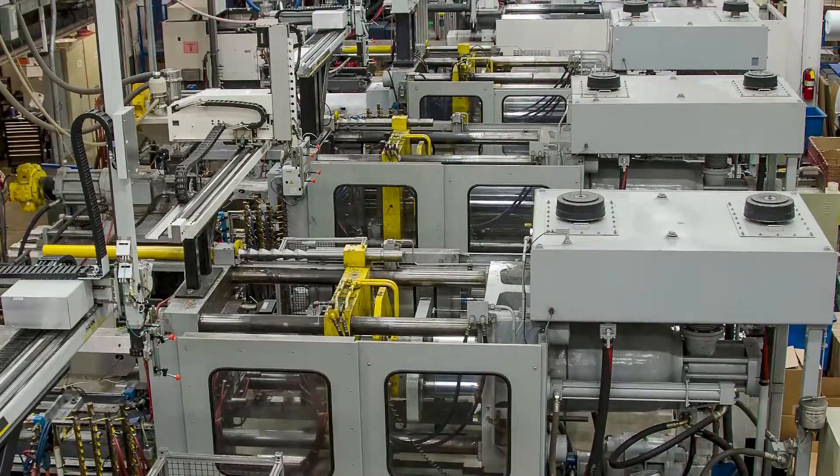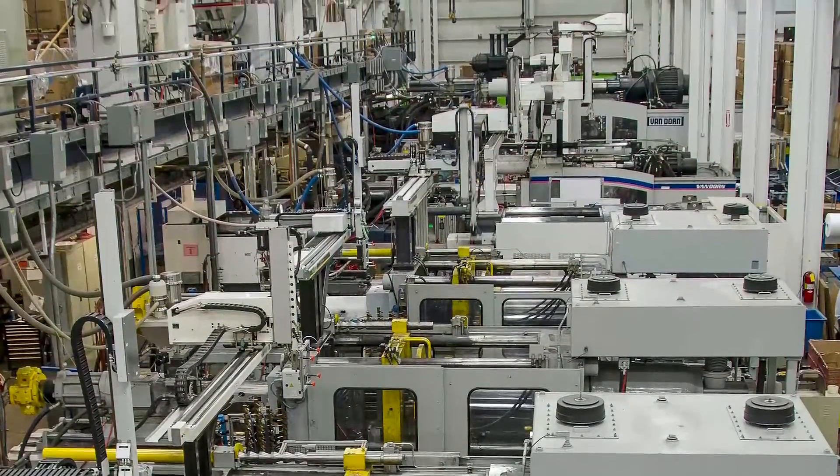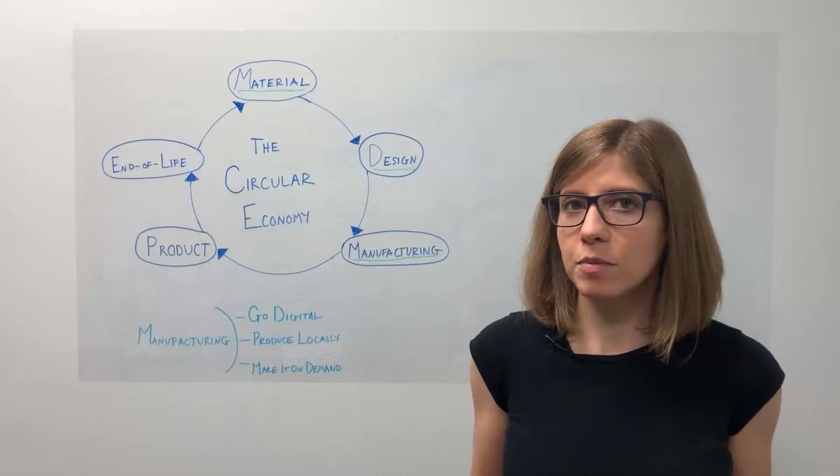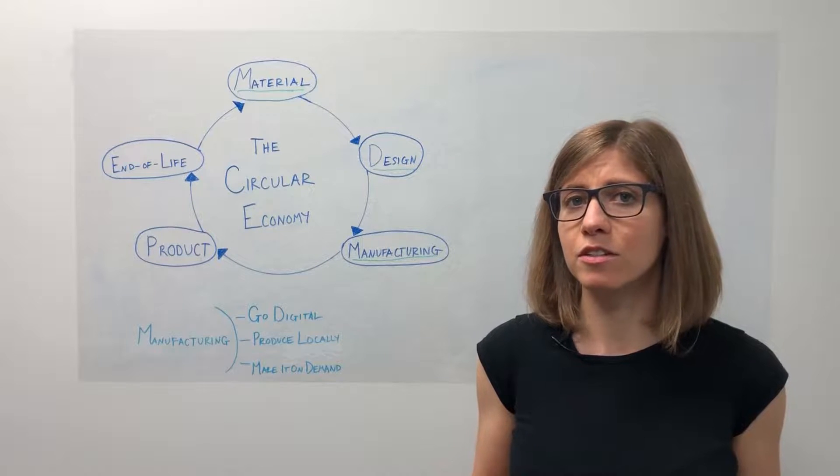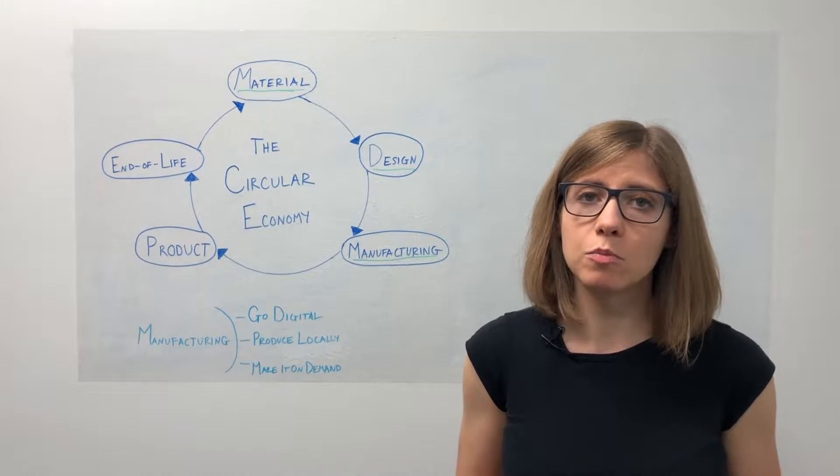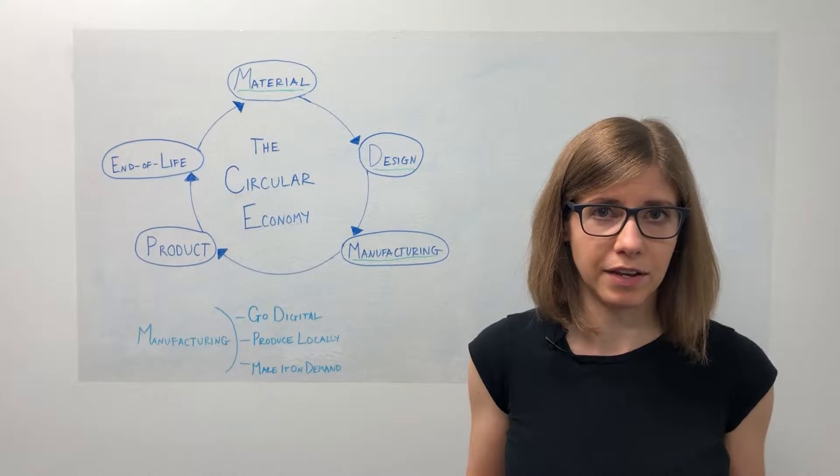If you think about traditional manufacturing, goods are often made in one large facility in one central location and shipped all over the world. That can be a cost-effective way of doing business, but if anything happens to disrupt that supply chain, say a global pandemic, it's going to be much more difficult to get those products out everywhere that they need to go as quickly as you might like.